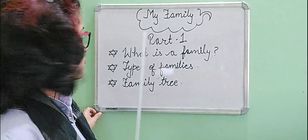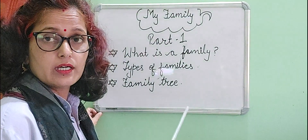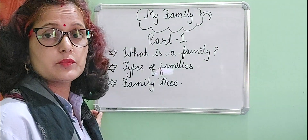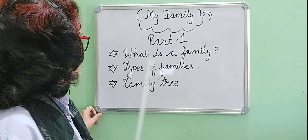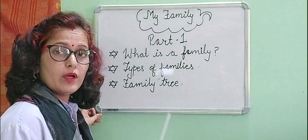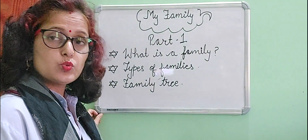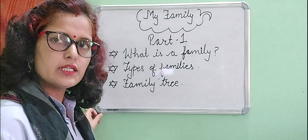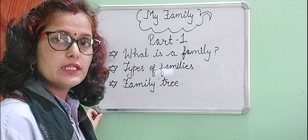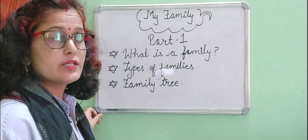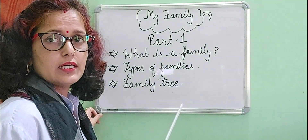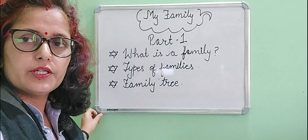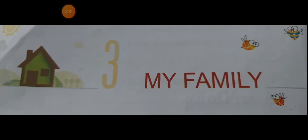The third sub-topic is family tree. In this part, we will discuss about the relationship between the family members. So in this part, we have discussed three sub-topics: first, what is a family; second, types of family; and third, family tree.